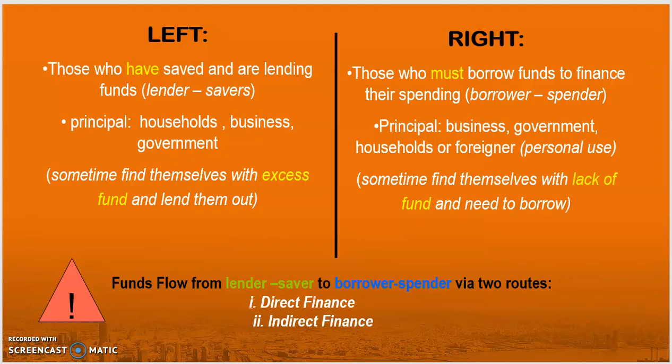Based on the flow chart, the left side describes the parties who save money in banks and lend their money to others who are more in need. They are known as lender-savers. The parties involved typically consist of households, businesses, and the government. These lender-savers often find that they have an excess of funds, which is why they keep their money in banks, and that money is then used to fund others.